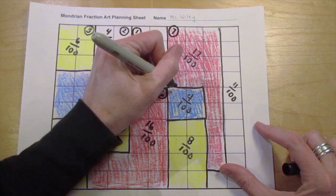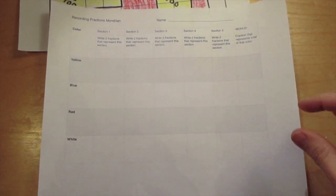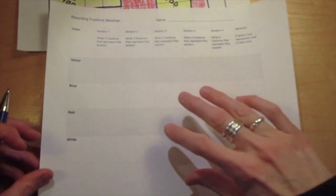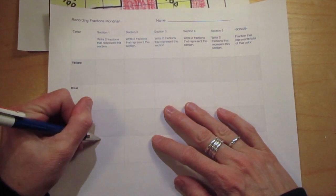Now that I have filled in my planning sheet, I will go to my recording fractions page and record my fractions. I will also record an equivalent fraction for each section.